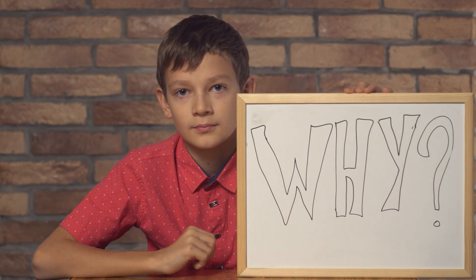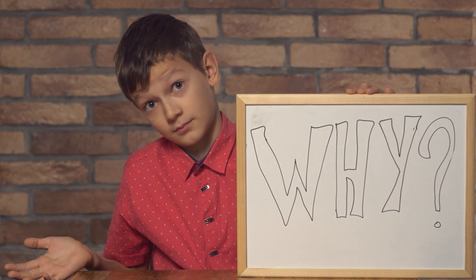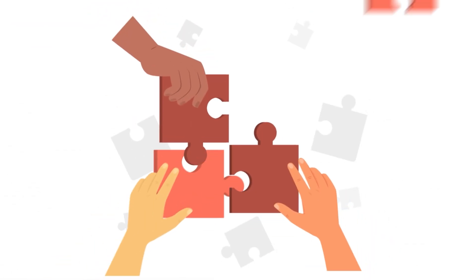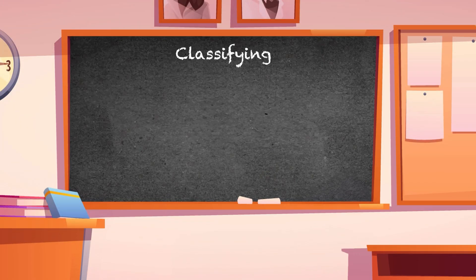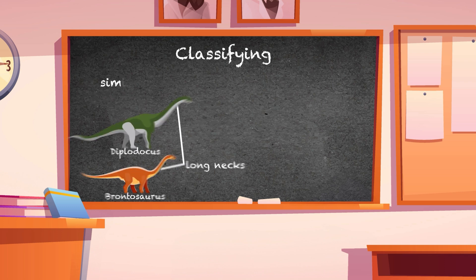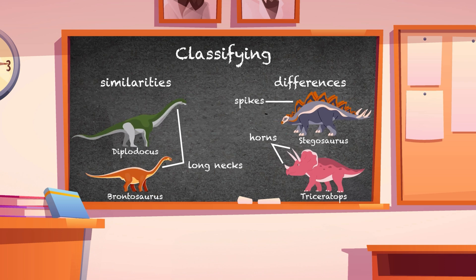Why do we classify things? We do it to understand how they are connected. Classifying helps us spot similarities and differences more easily, and we can find what we need faster.